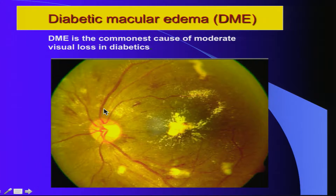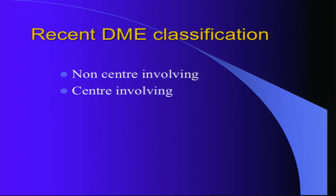We all know that diabetic macular edema is the commonest cause of moderate visual loss, and it's OCT which has now reclassified DME. Most of us are now using the terms non-center involving and center-involving DME, rather than the older classification which was based mainly on the ETDRS geography.